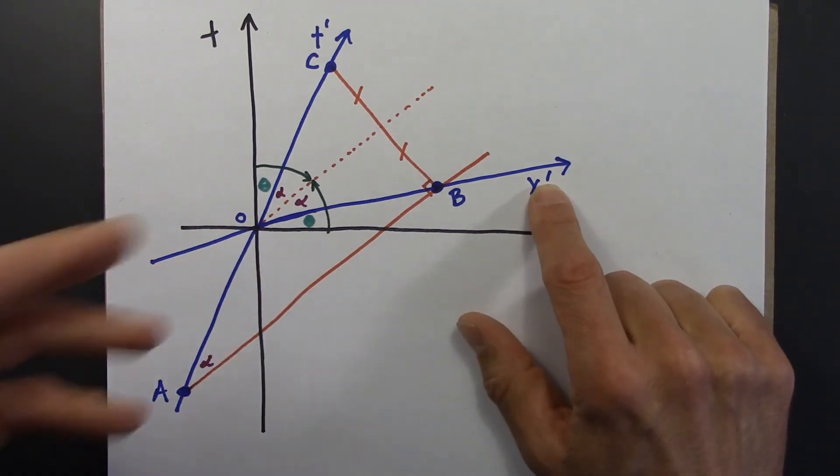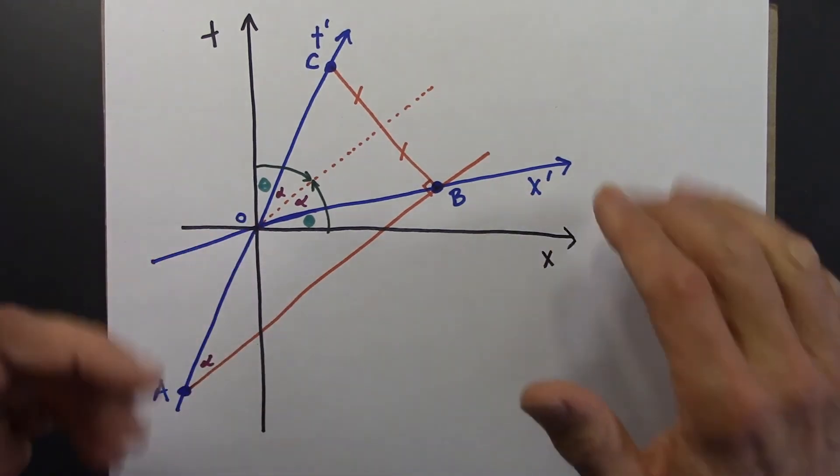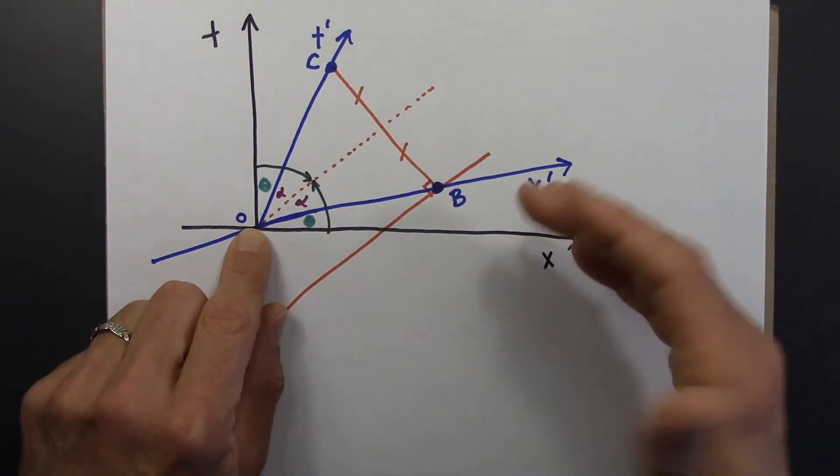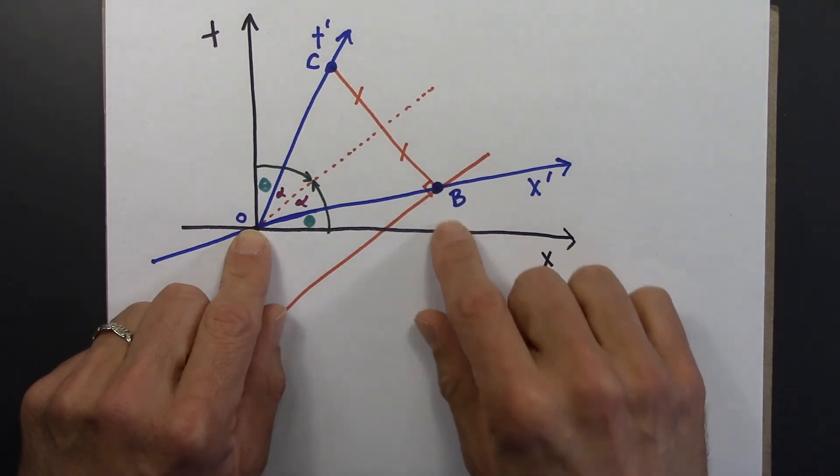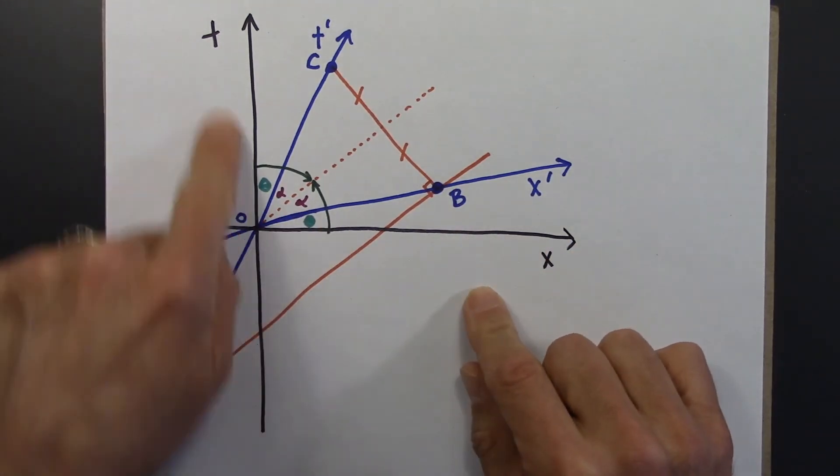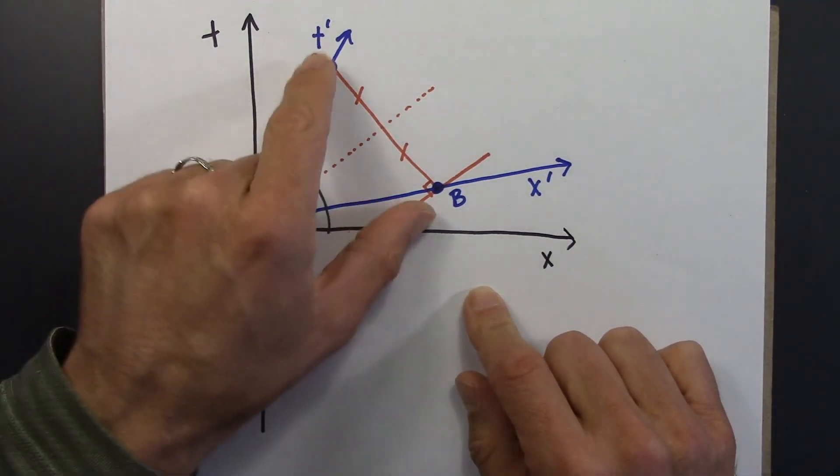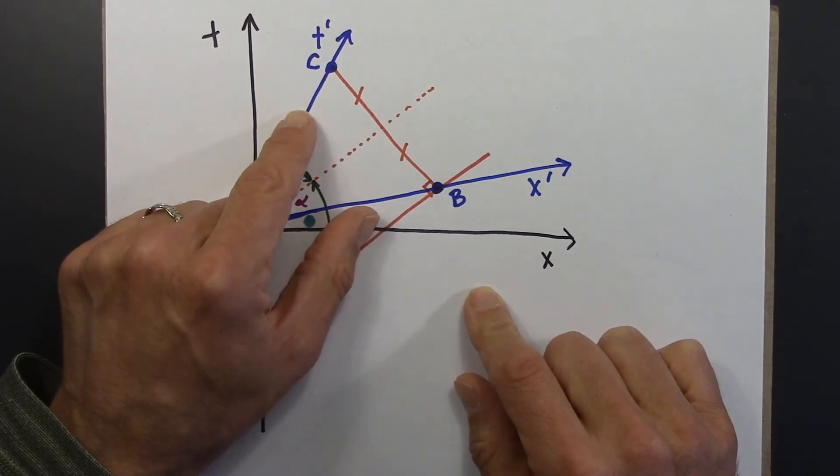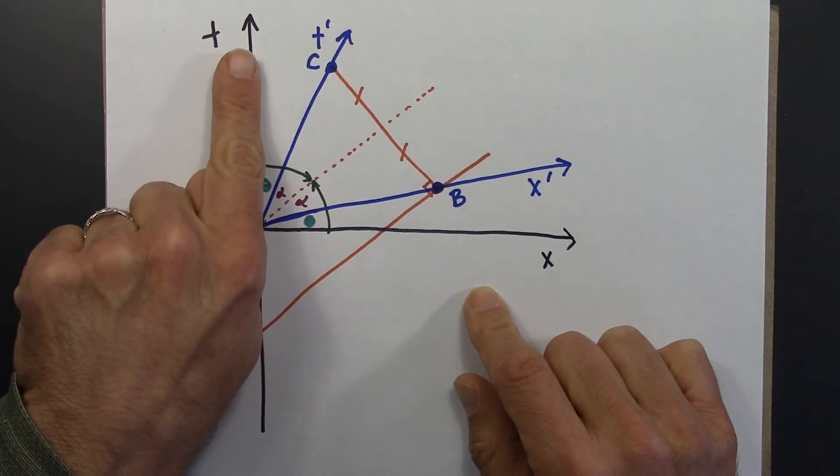So now we have all the ingredients that we need to construct a 2-observer, a 2-reference frame space-time diagram. We have x and t. If the primed reference frame, Beowulf, is moving at a speed beta, then we know how to make t.